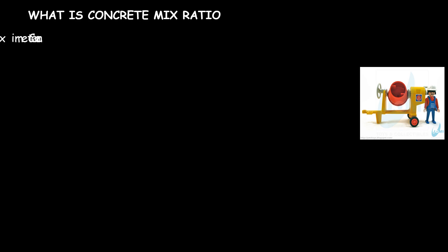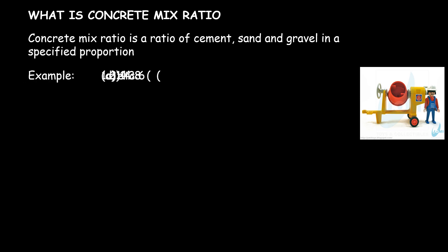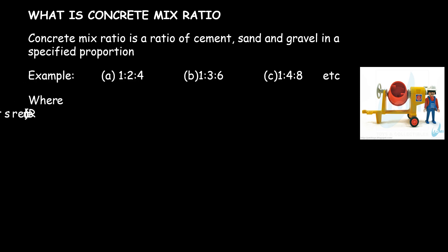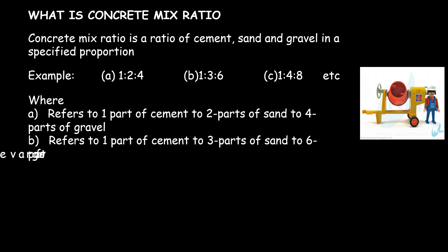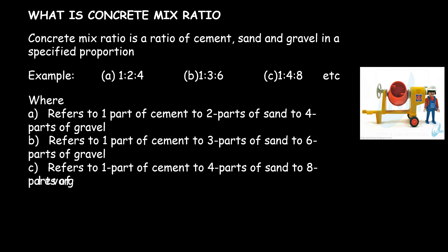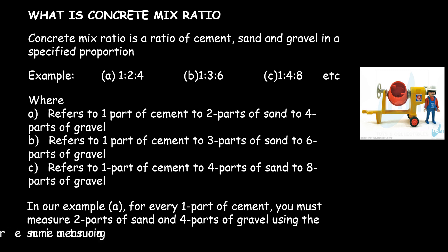Welcome back. Today we will start with: what is a concrete mix ratio? A concrete mix ratio is a ratio of cement, sand, and gravel in a specified proportion. For example, we have mix ratios of 1:2:4, 1:3:6, and 1:4:8.